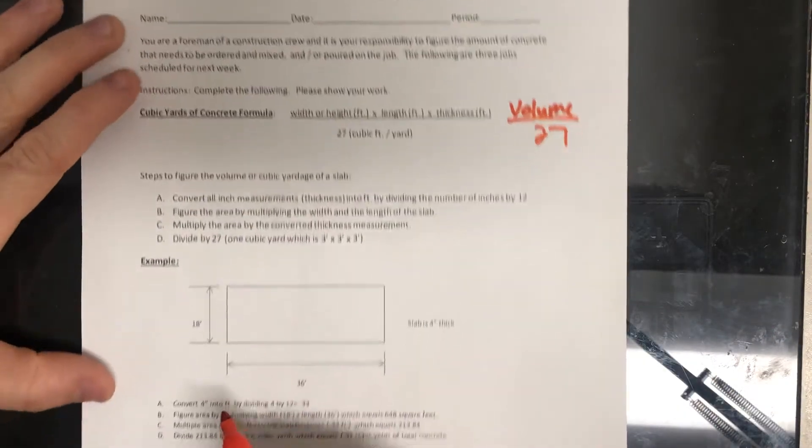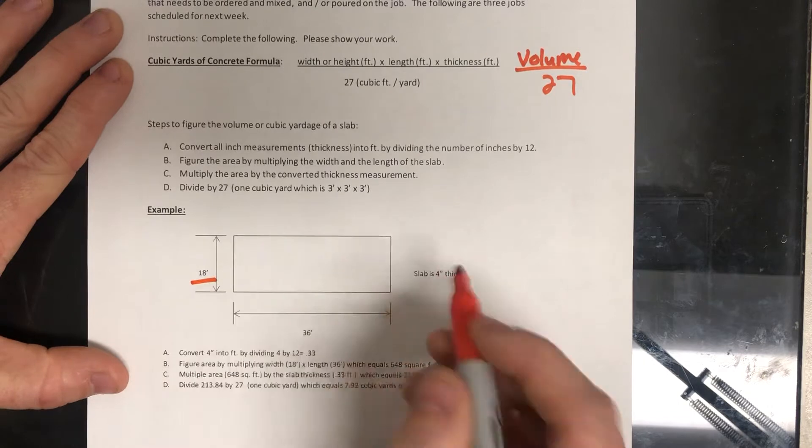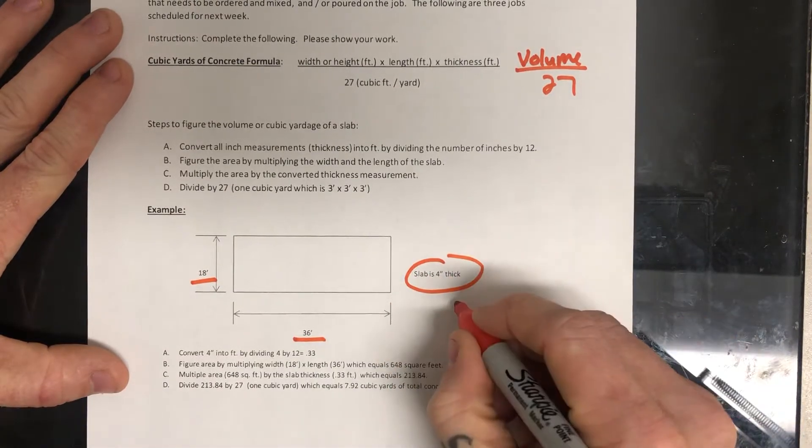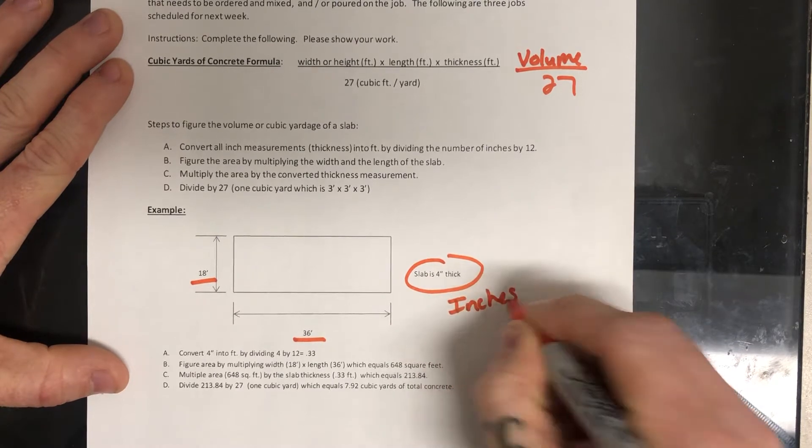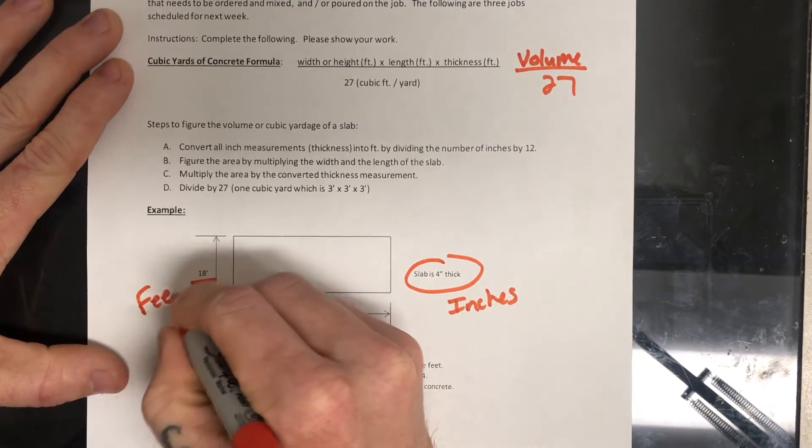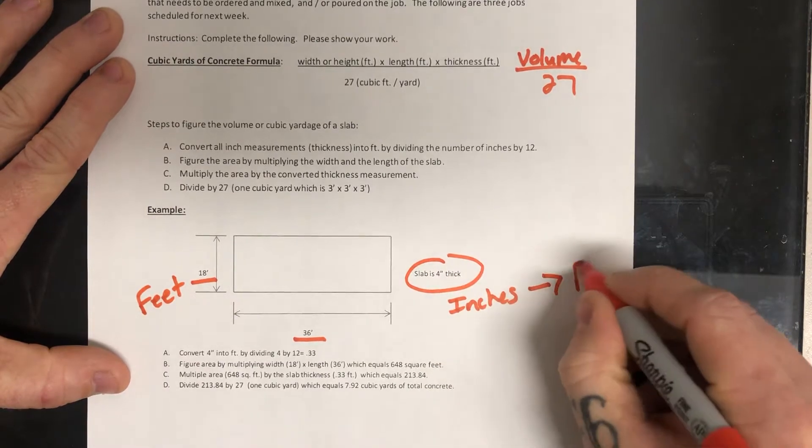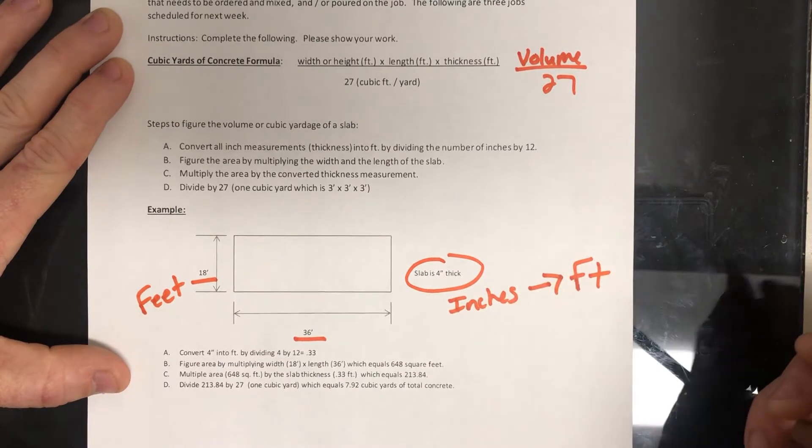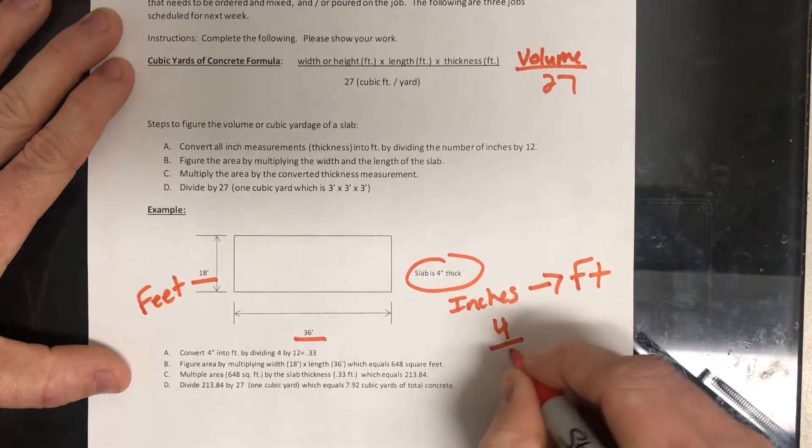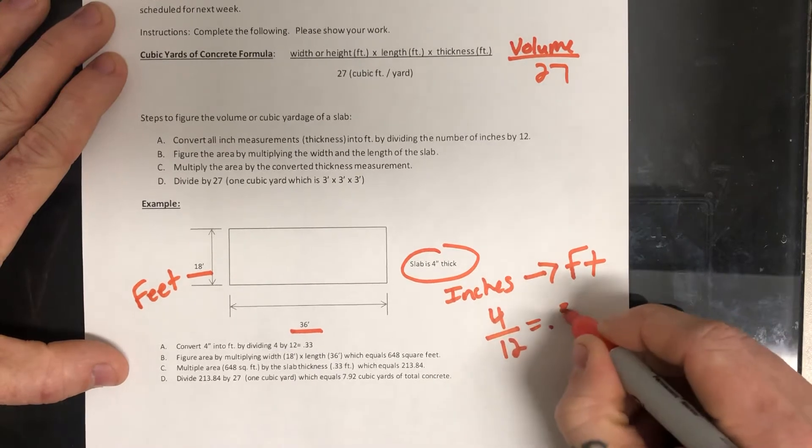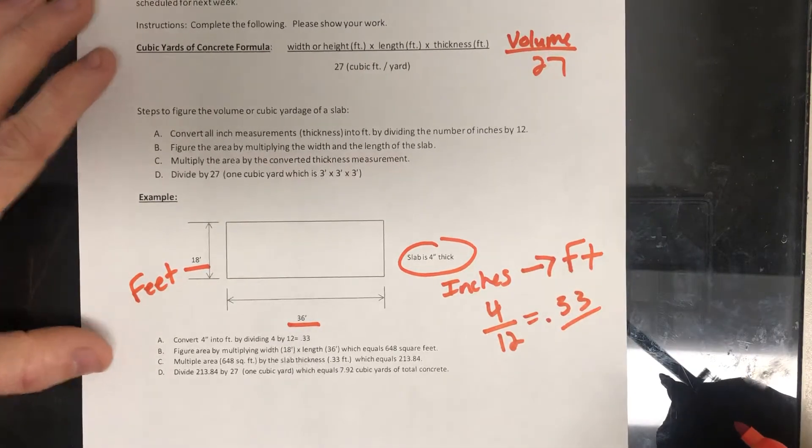All right, so looking at this slab down here, really simple. We have 18 times 36, and we have to multiply it by four inches. So notice that this is inches, and these are feet. So we have to convert this into feet. The way we do that is we take four and divide it by 12. Four inches out of 12 inches in a foot is going to give you 0.33 or one third.